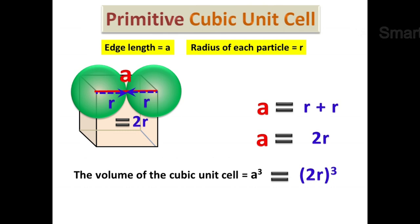we get 2r whole cubed. By simplification, 2 cubed becomes 8 and r cubed remains as it is. So the volume of the cubic unit cell is equal to 8r cubed.